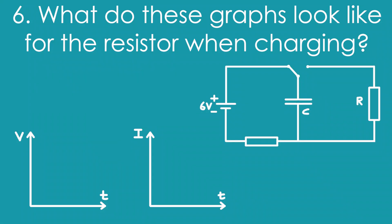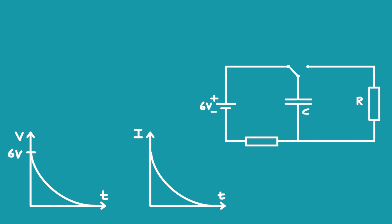Six, what do these graphs look like for the resistor when charging? That's the resistor on the left here. Both the current and the PD across the resistor decrease exponentially. Don't forget that six volts needs to be shared across the resistor and the capacitor, and at the beginning the resistor has all of the six volts.